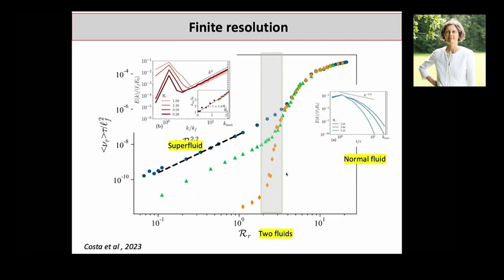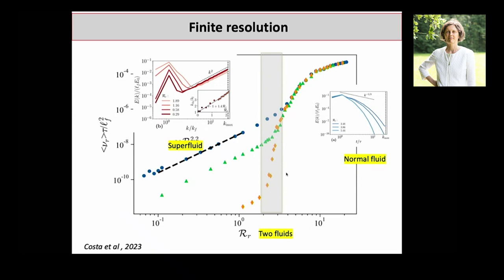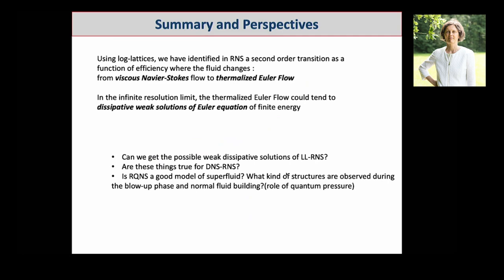You can identify the superfluid as a weak solution and the normal fluid as a viscous solution. The sound waves in this system could be captured by the thermalization of the solution. What is very nice is that you can have finite dissipation by weak solution — as observed in superfluids — without needing any other ingredient. You just need to say that this equation can have weak solutions, and if it does, it will dissipate energy even without viscosity. That is where I will stop. Here is just a summary of all I have been saying, and I'd be happy to take a few questions.